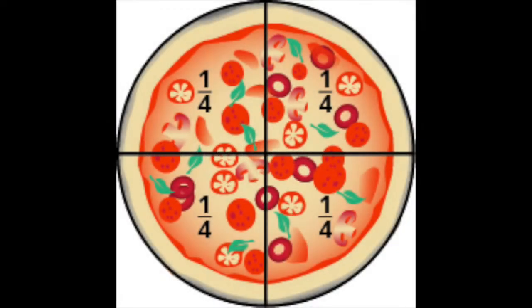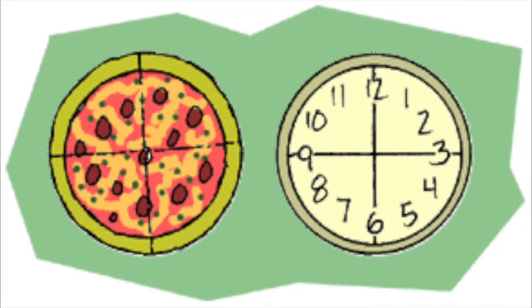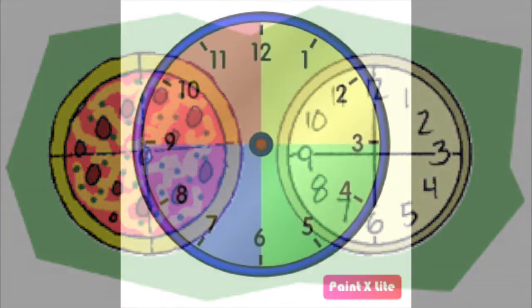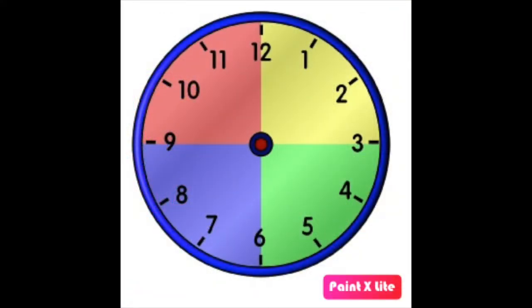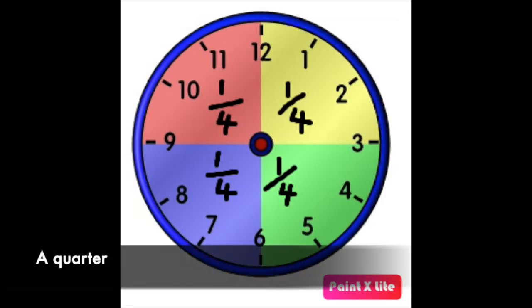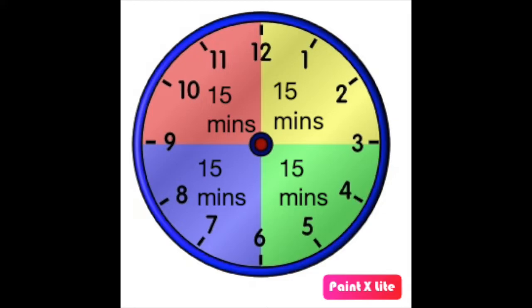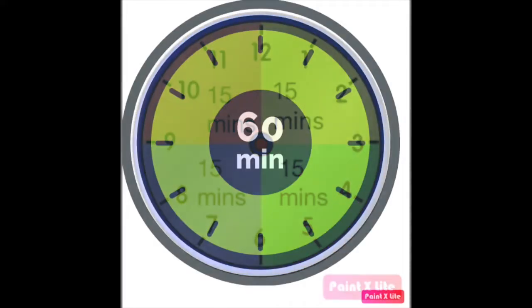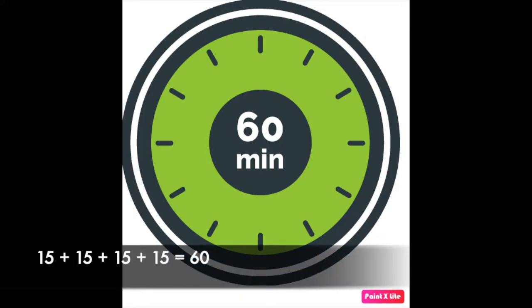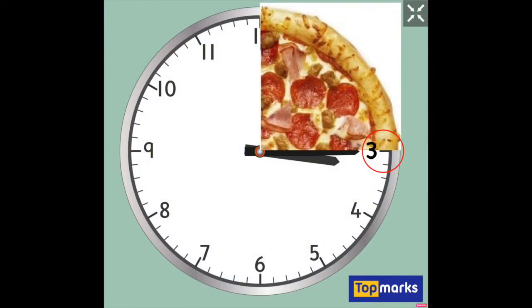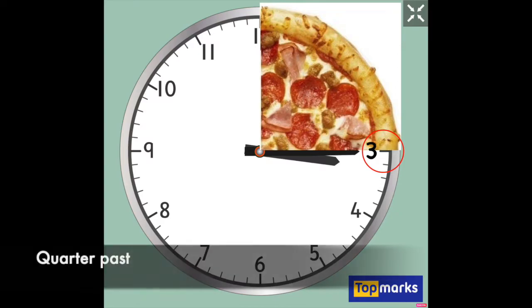If you remember, we learned last week that a quarter is when something is divided equally into four parts. So a circle shape, which is just like a clock face, broken into four pieces, looks like this. Each of these sections is called a quarter, and each quarter on a clock marks 15 minutes of time, adding up to a whole round clock of 60 minutes — 15 plus 15 plus 15 plus 15. When we placed one quarter of pizza on the right side of the clock, it helped us to visualise what number the big hand points to for quarter-past times, which was the number 3.